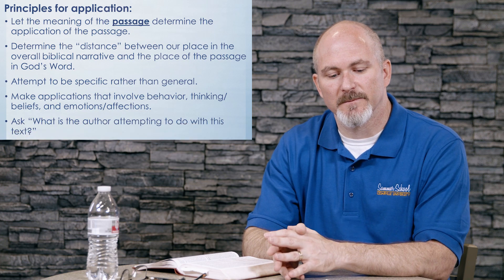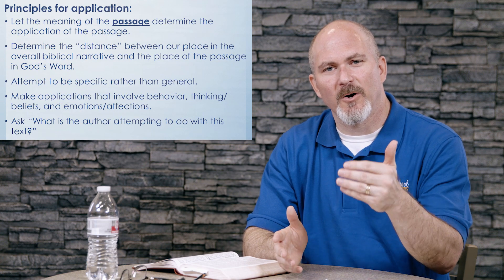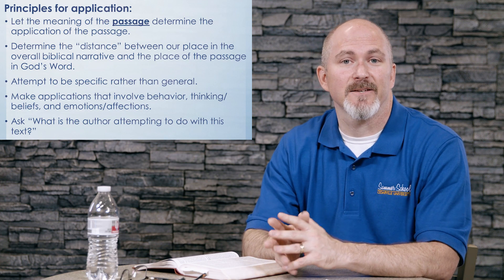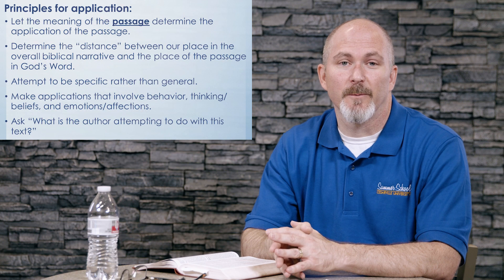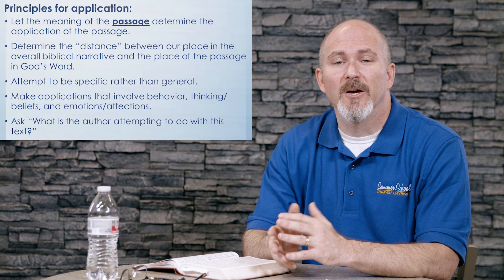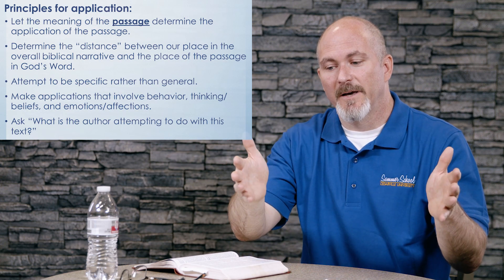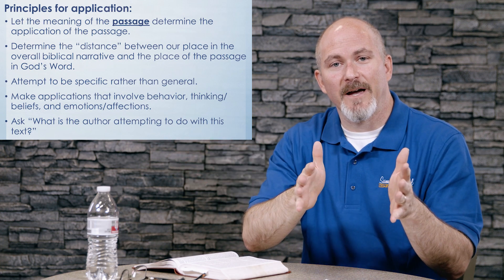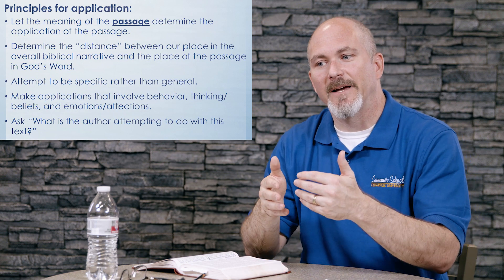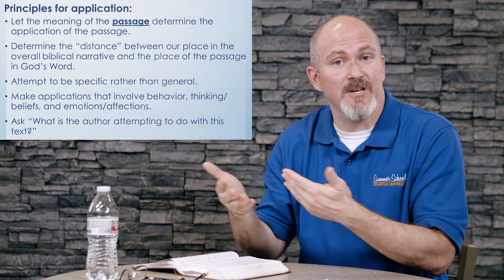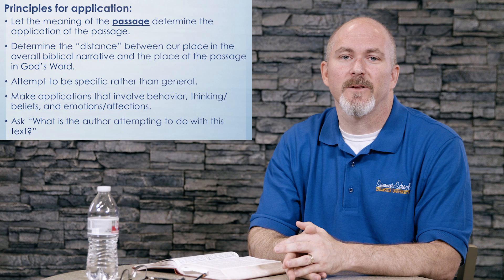The final principle is to step back from the passage you've been studying and ask: what is the author attempting to do? Authors write to specific people for specific reasons and specific situations, so what are those specific reasons? What is the author trying to get his listeners or readers to do? For example, the book of Jonah ends without us knowing how Jonah responds. Could it be that the author wants his audience to not only identify with Jonah but to be corrected like Jonah? It's a story where we don't know how Jonah responds — and it's also an implicit challenge to us: are we like Jonah? Should we be corrected like Jonah? Is there anything we can learn from God's correction of Jonah?